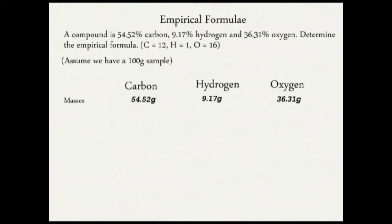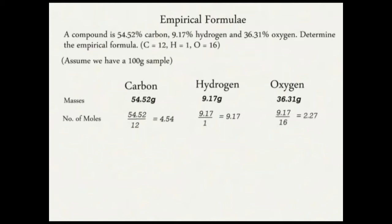The next step is to convert the number of grams into moles using the molar mass. The number of moles equals mass over the molar mass. For carbon: 54.52 ÷ 12 = 4.54 moles. For hydrogen: 9.17 ÷ 1 = 9.17 moles. For oxygen: 36.31 ÷ 16 = 2.27 moles.